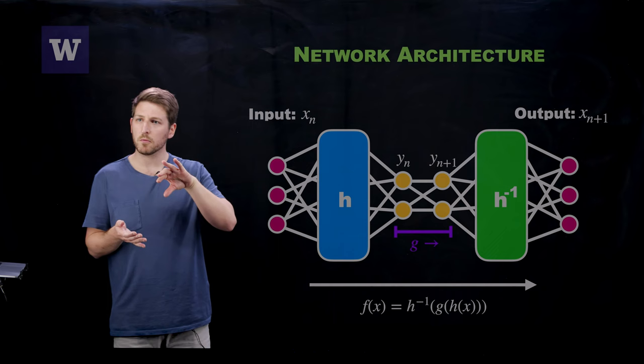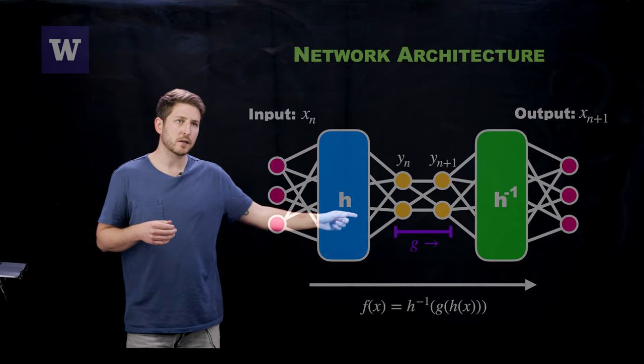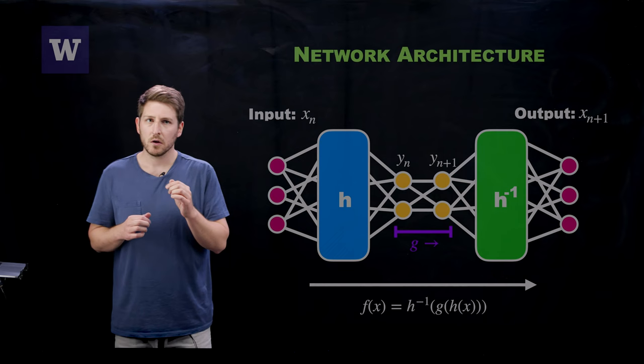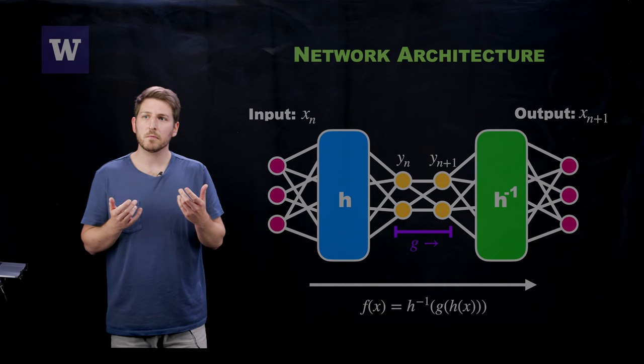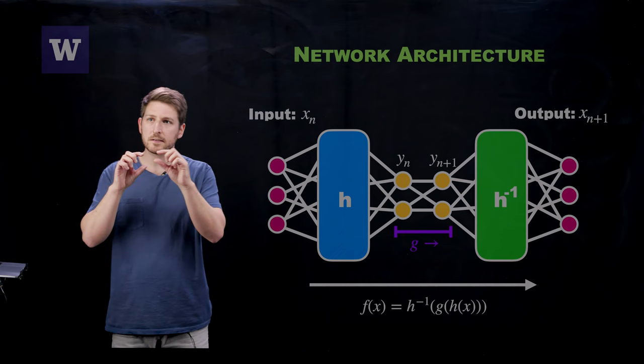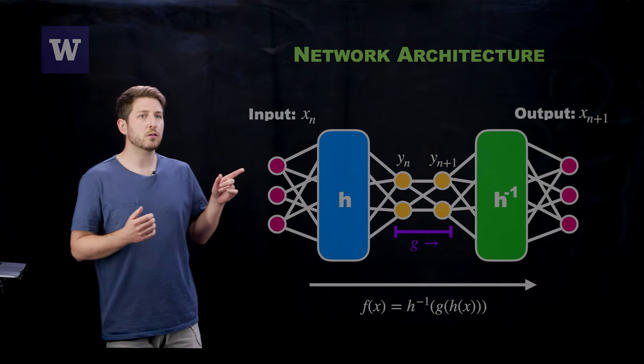The decoder is the inverse of this homeomorphism that takes you from the latent space back out. And on the inside of the network here is your latent mapping, your conjugate mapping g, which you expand in a basis which could be kept relatively simple, say monomials, for example. And during the training process, you find the weights that give you the appropriate h and h inverse, as well as the coefficients in this basis expansion for your mapping g.